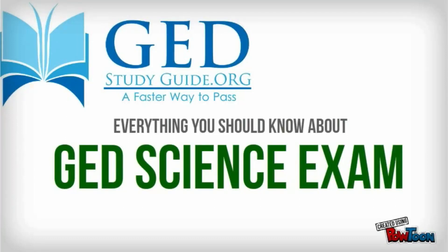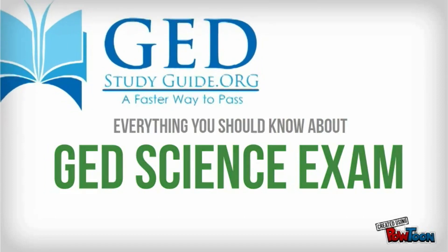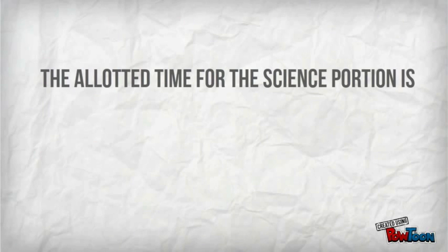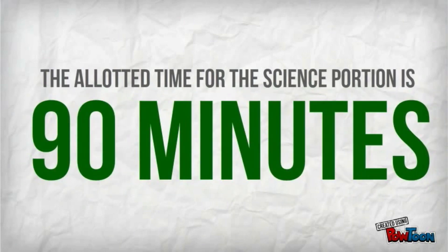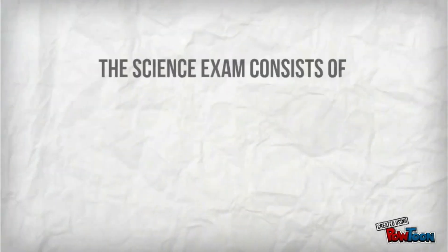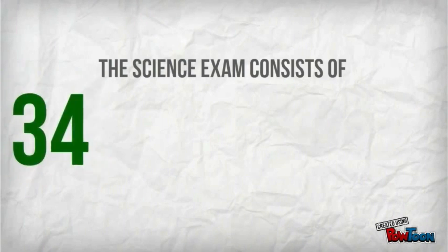GED Study Guide dot org presents Everything You Should Know About the GED Science Exam. The allotted time for the science portion is 90 minutes. The exam consists of 34 questions.